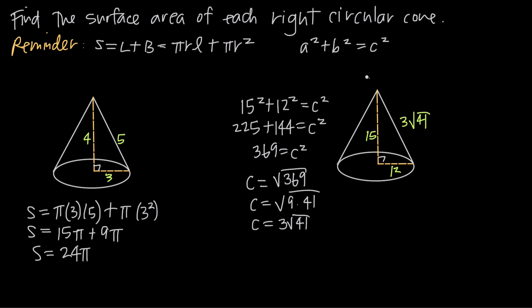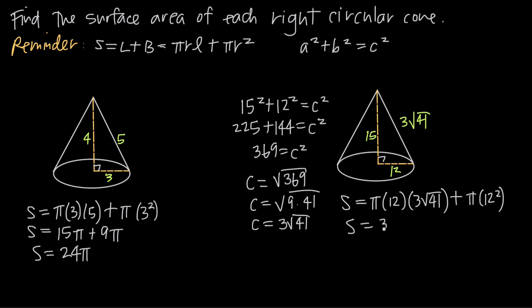Now that we have the slant height, we can plug into our surface area formula. Surface area equals pi times r, the radius 12, times l, the slant height 3√41, plus πr², which is π times 12 squared. Simplifying: 12 times 3 is 36, so we get 36√41 · π, plus 12 squared is 144, so plus 144π. We'll leave our answer in terms of pi, but if you want a decimal approximation, just plug in 3.14 for pi. That's how you find the surface area of a right circular cone.